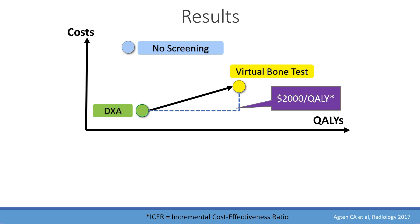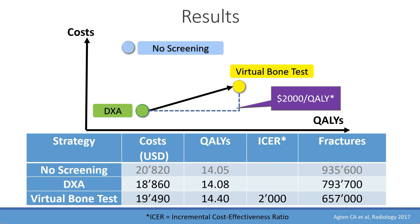For comparison, the CT lung screening study had an ICER of $81,000 per QALY — much higher. Typically, values below $100,000 are considered cost effective in the United States and some European countries; below $50,000 is considered quite clearly effective. In the UK, thresholds of £20,000–£30,000 are sometimes referenced. In our osteoporosis study, no screening resulted in 900,000 fractures, while the virtual bone test reduced that number by about 30% — quite impressive, showing how screening can ultimately save money for the public despite the upfront cost.